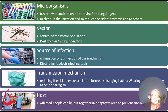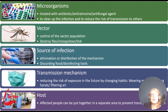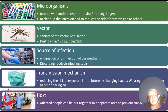In summary, when trying to manage diseases, we can break it down into five separate categories. First, managing the microorganisms — this involves treatment using antibiotics, antiretrovirals, or antifungal agents. Next, you can control the vector responsible for transmitting the disease; vector control includes eliminating flies, mosquitoes, or ticks. Then we can address the source of infection — this involves disinfecting or elimination, cleaning of surfaces, and sterilizing equipment. Then we can look at transmission mechanisms, which can be curbed by changing habits, like wearing masks and washing our hands properly.